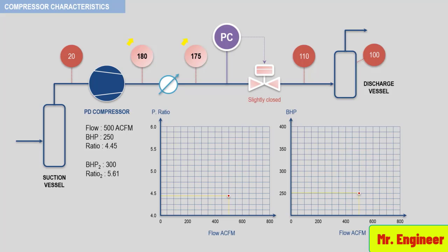Now, let's plot these two points on the two graphs. The new pressure ratio as a function of the flow and the new bhp or brake horsepower as a function of the actual flow. Notice here that both pressure ratio and brake horsepower curves are essentially a vertical line.